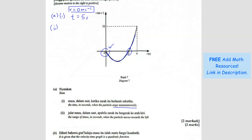Question A2: The range of time when the particle moves towards the left. Negative means left. The whole journey from 0 seconds to the 5th second is negative, so it's moving to the left. The time range is 0 < t < 5. We cannot use the equal sign because at 0 seconds and 5 seconds the velocity is 0, meaning the particle stops — it's not moving left at those instants.